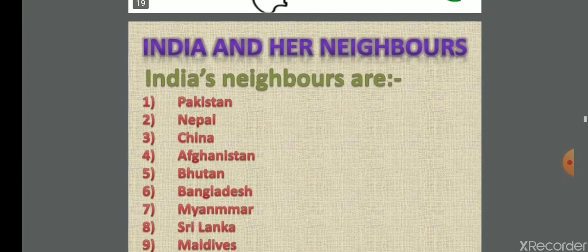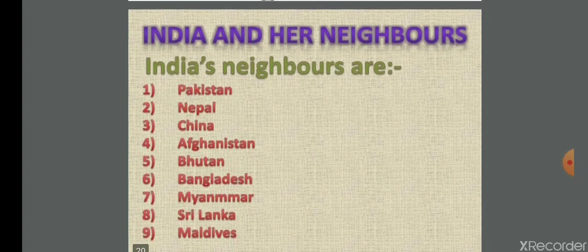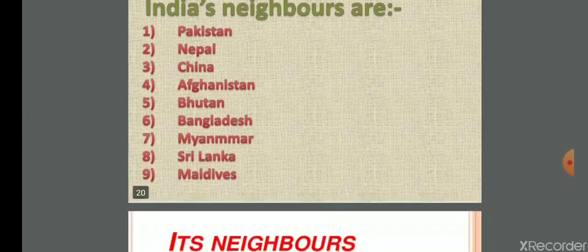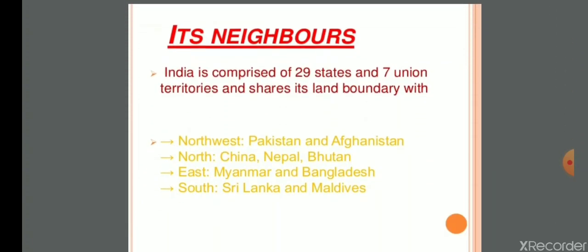India and our neighbors: India's neighbors are Pakistan, Nepal, China, Afghanistan, Bhutan, Bangladesh, Myanmar, Sri Lanka, and Maldives. India is comprised of 29 states and seven union territories and shares its land boundary with several countries.